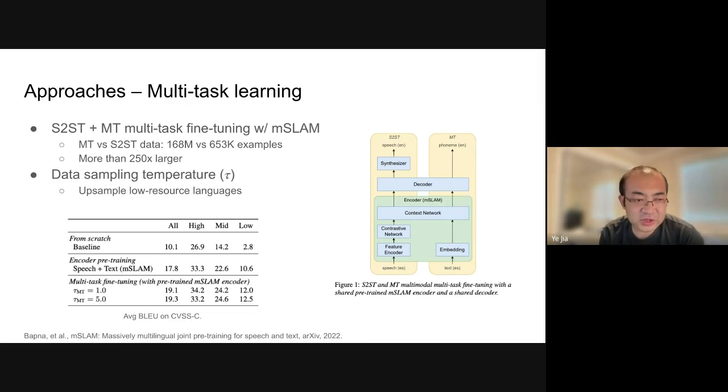Because there are 21 languages involved and many of them are low resource, we tried upsampling the low resource languages with a temperature during the training, and we do see a difference on the result. The result is shown in the table on the lower left. When we utilize the multi-task fine-tuning including MT data, we get a better result compared to not using it. And when we upsample the low resource languages, we can get a better result as well, especially for low resource cases.